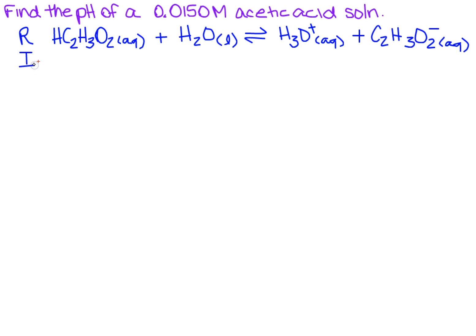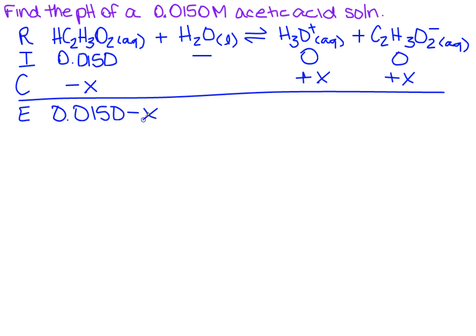Now, I is our initial concentration. The only initial concentration I was given was for the acetic acid, so this is 0.0150. Water is a liquid, so we don't care about it. There was no hydronium and no anion. The C is the change, so I'm going to have to lose part of this, so it's a minus X. That means on the other side it has to be a plus X and a plus X. For equilibrium, you're going to add straight down. So I'm going to get 0.0150 minus X. Over here, I just get X, and I get X.